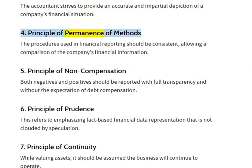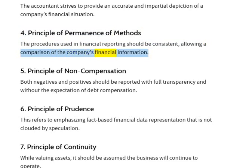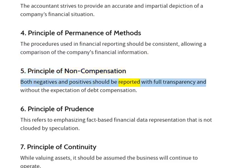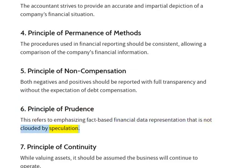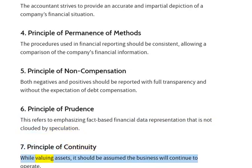4. Principle of Permanence of Methods: the procedures used in financial reporting should be consistent, allowing a comparison of the company's financial information. 5. Principle of Non-Compensation: both negatives and positives should be reported with full transparency and without the expectation of debt compensation. 6. Principle of Prudence: this refers to emphasising fact-based financial data representation that is not clouded by speculation. 7. Principle of Continuity: while valuing assets, it should be assumed the business will continue to operate.